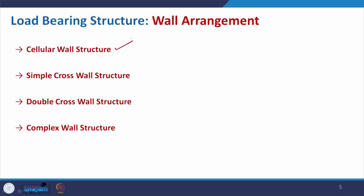The main component of the load bearing structure is the wall, whether stone masonry or brick masonry. Depending on the requirement, the arrangement of those walls may vary, and how the structure is designed will also vary case by case — whether for a residential building, school building, or hostel. Based on that, we have four classifications of wall arrangement: cellular wall structure, simple cross wall structure, double cross wall structure, and complex wall structure.